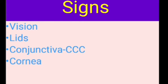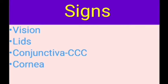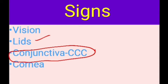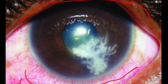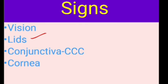Regarding signs, vision is decreased depending on the extent and location of the ulcer. If the ulcer is in the central pupillary area, vision is drastically decreased, and if severe, DM folds or corneal edema further reduce vision. On examining the lids, there will be lid edema. In the conjunctiva, the patient may exhibit both conjunctival congestion as well as circumcorneal congestion.